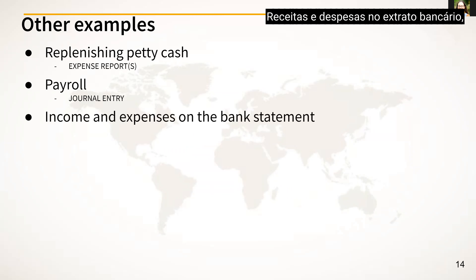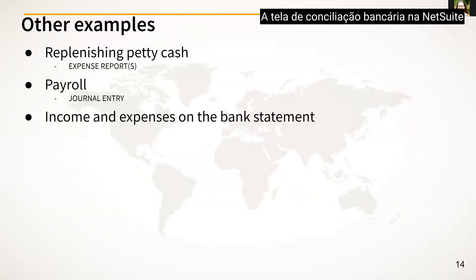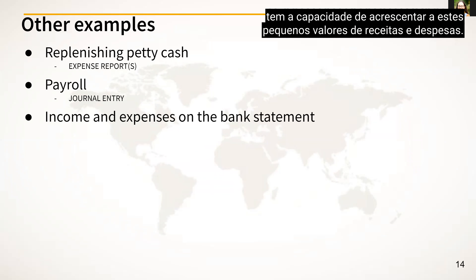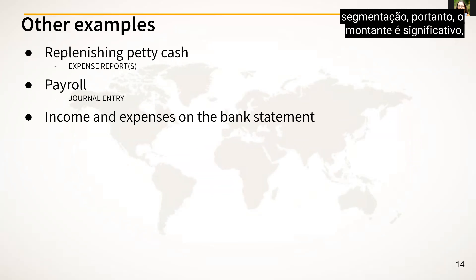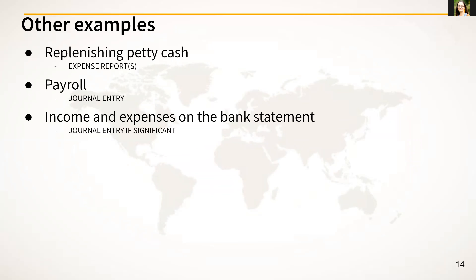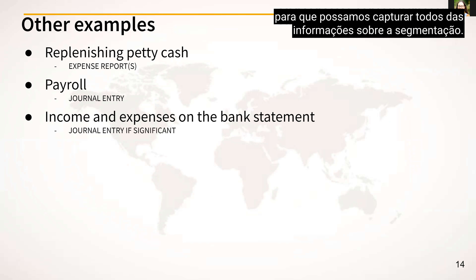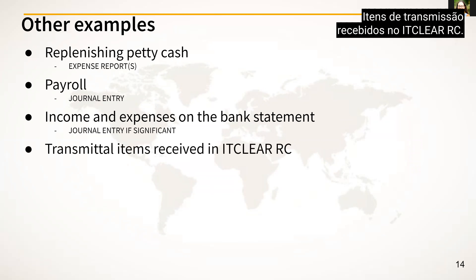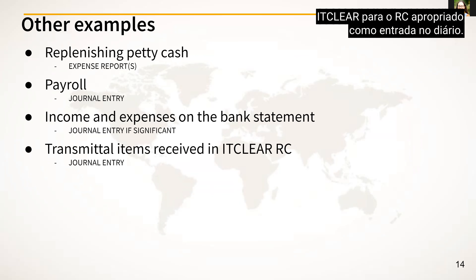For income and expenses on the bank statement such as interest expense and bank fees — the bank reconciliation screen in NetSuite has the ability to add in these small income and expense amounts. However, it does not add segmentation, so if the amount is significant, you should enter it as a journal entry to capture all segmentation information. Transmittal items received in the ITClear RC should also be entered as a journal entry so that you can transfer them from ITClear to the appropriate RC.